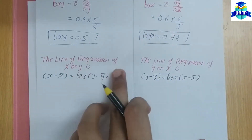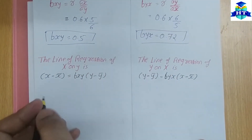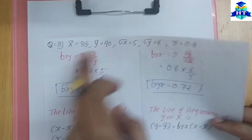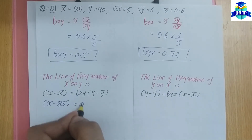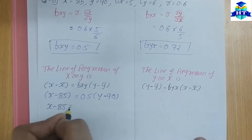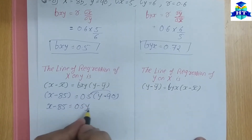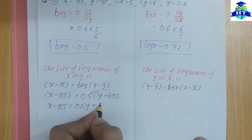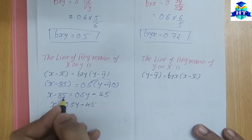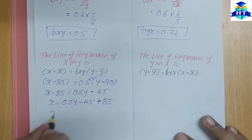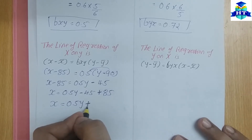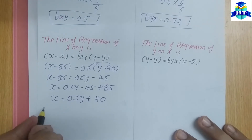Now we write the line of regression of X on Y: X minus X̄ equals B X on Y multiplied by (Y minus Ȳ). X̄ is 85, Ȳ is 90, and B X on Y is 0.5. So X minus 85 equals 0.5 times (Y minus 90), which gives X equals 0.5Y minus 45 plus 85, so X equals 0.5Y plus 40.